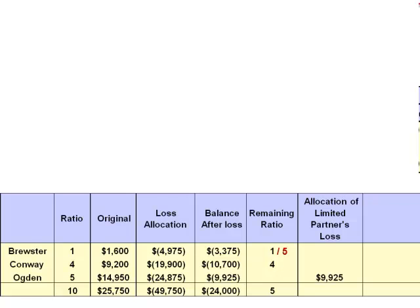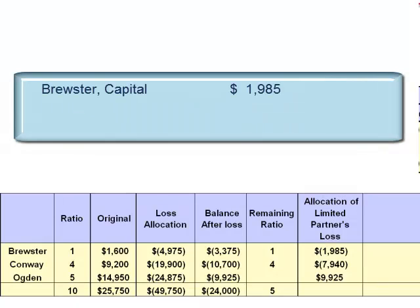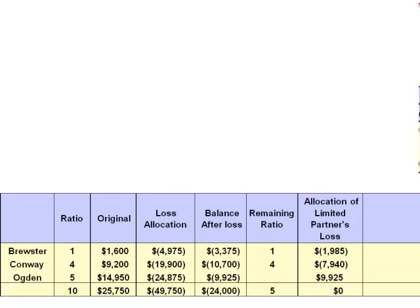Brewster will absorb one-fifth of the $9,925 deficit balance — $1,985. Conway will absorb four-fifths of the $9,925 deficit balance — $7,940. The journal entry is a debit to Brewster's capital account $1,985, a debit to Conway's capital account $7,940, and a credit to Ogden's capital account $9,925, bringing Ogden's capital balance up to zero. This allocation does not change total equity — it simply changes the allocation.